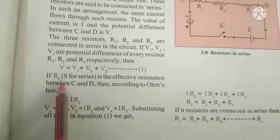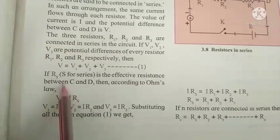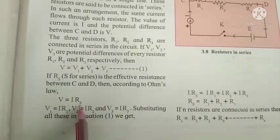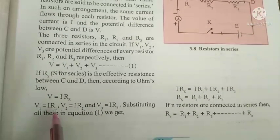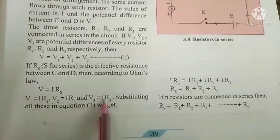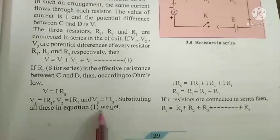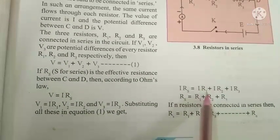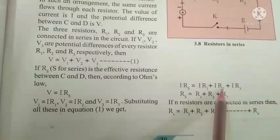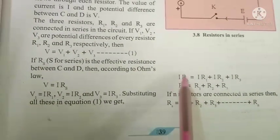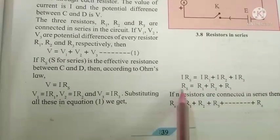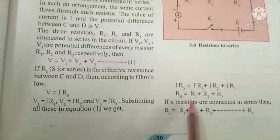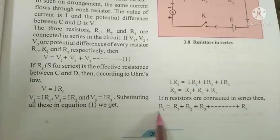Let RS be the effective resistance in series between C and D. According to Ohm's Law, V = I × RS. Also, V1 = I × R1, V2 = I × R2, and V3 = I × R3. Substituting in the equation: I × RS = I × R1 + I × R2 + I × R3. Cancelling I, we get RS = R1 + R2 + R3. If N resistors are connected in series, the effective resistance is the sum of all individual resistances.